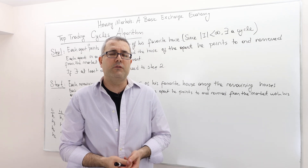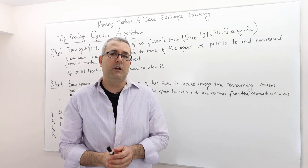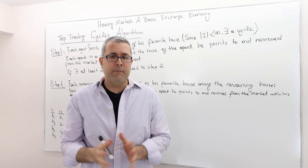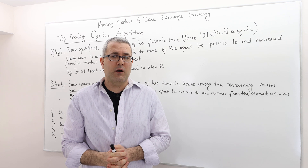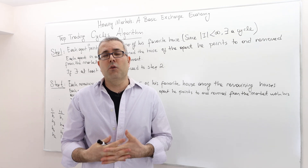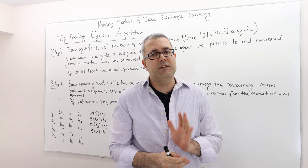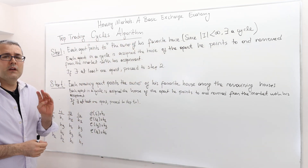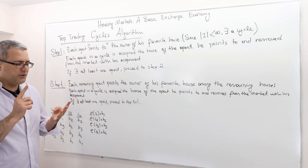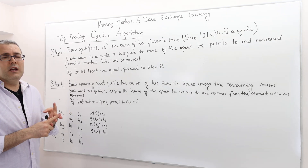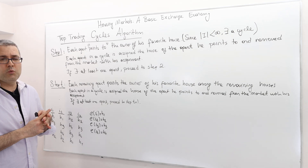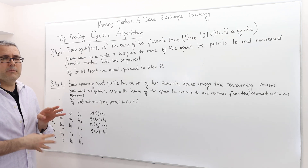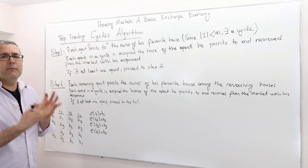In this episode, I'm going to describe a very powerful mechanism — an algorithm that we can use for any housing market problem. It's called top trading cycles. So once again, give me any housing market, meaning a set of agents, set of houses, preferences, and who owns what initially. You can apply the top trading cycle algorithm and come up with some matching.